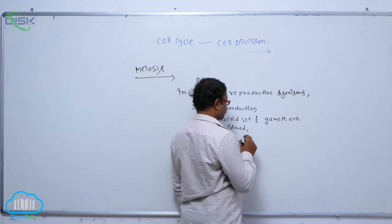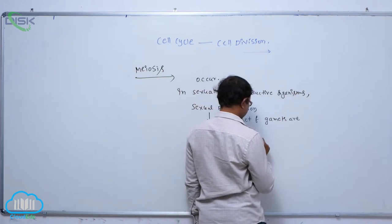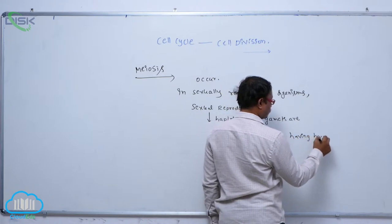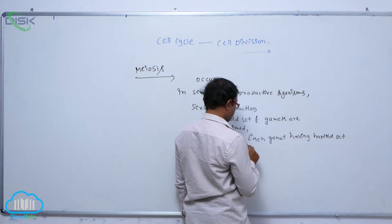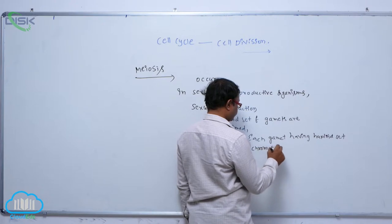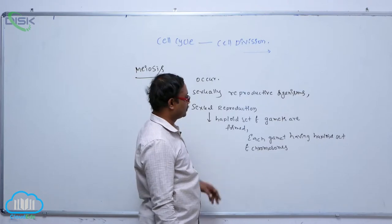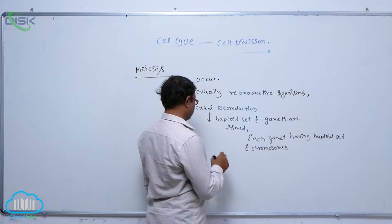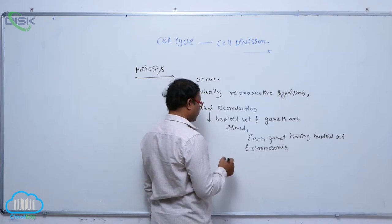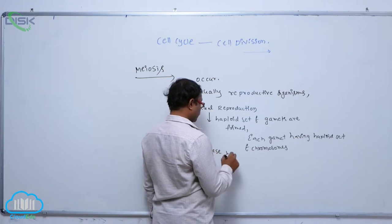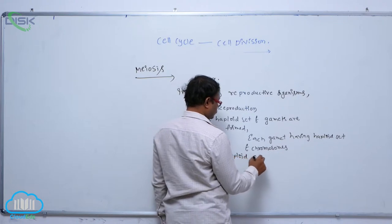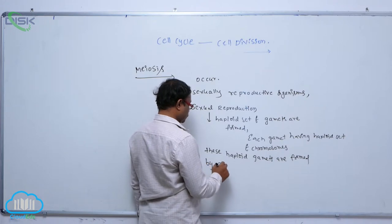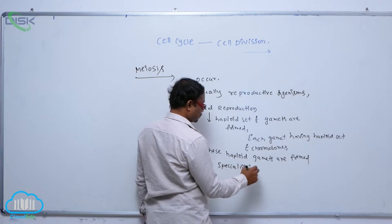Each gamete has a haploid set of chromosomes. For the formation of haploid gametes, special types of cells are required. These haploid gametes are formed by specialized diploid cells.